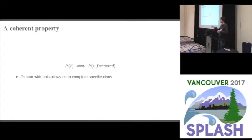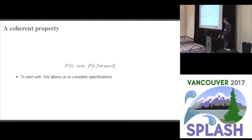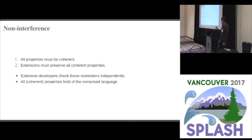Any time we introduce a new forwarding production, we have a new case for any property that needs to be filled in, and we can say: P of that forwarding production is just equal to P of what it forwards to. As long as the forwarding process is terminating — which is just an assumption we make — that is enough to complete the specification. We're then able to ensure non-interference by imposing two restrictions. Restriction one: you are not allowed to rely on any incoherent properties — every property used in specifying the behavior of an extension must be a coherent property.